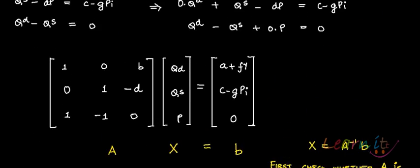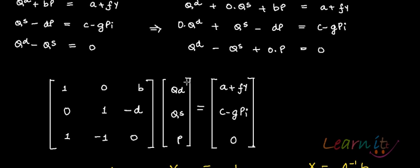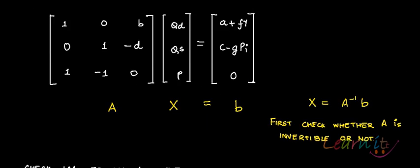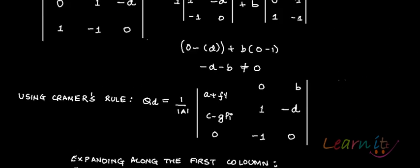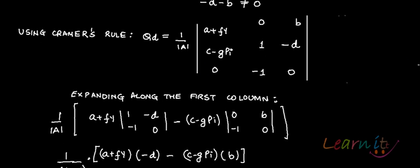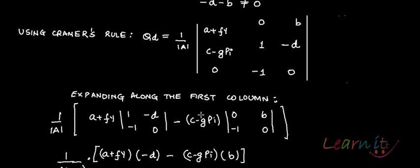Using Cramer's Rule to find QD, we superimpose the column of exogenous variables onto the first column of the coefficient matrix. We then compute one over the determinant of A times the determinant of this modified matrix. Expanding along the first column, the relevant cofactor terms involve A plus FY, then minus D, then minus 1, and then minus C minus GPI.